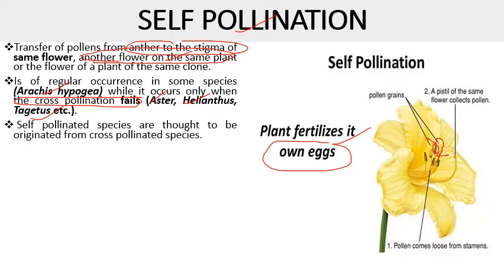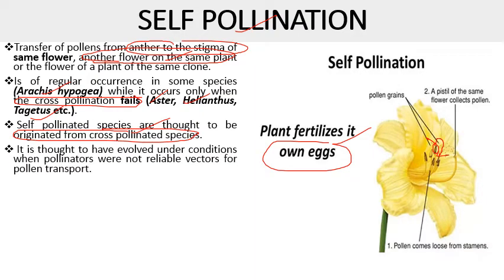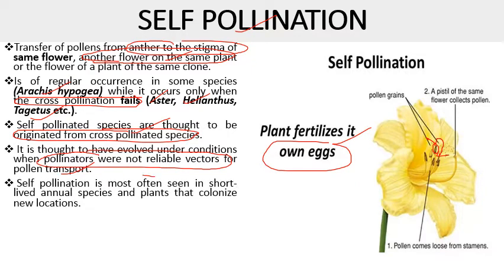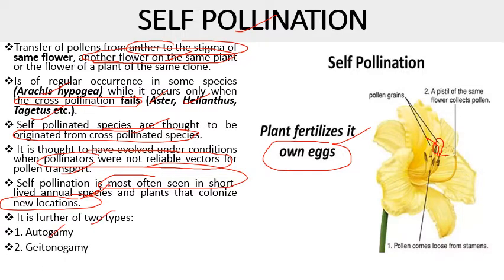Self-pollinated species are thought to have originated from cross-pollinated species. It is thought to have evolved under conditions when pollinators were not reliable vectors for pollen transfer — an adaptation because plants were unable to find suitable pollinators. Self-pollination is most often seen in short-lived annual species and plants that colonize new locations. It is further of two types: autogamy and geitonogamy.